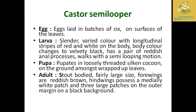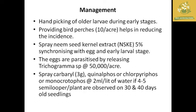For management of semi-loopers: the first step is collection and destruction of old larvae. Collect and destroy them. Install bird perches at 10 per acre to control castor semi-looper incidents. Neem seed kernel extract can also be sprayed. We can release biocontrol parasites — Trichogramma species at 50,000 per acre.